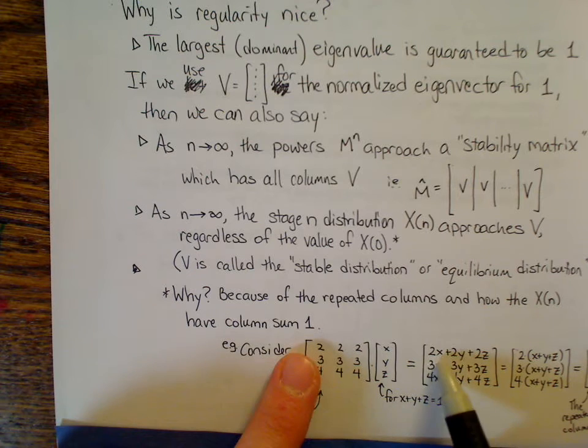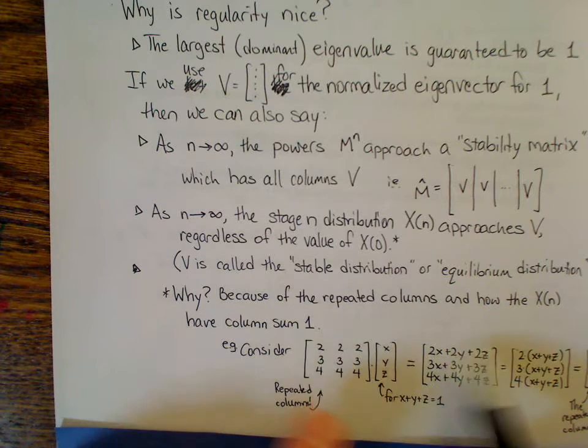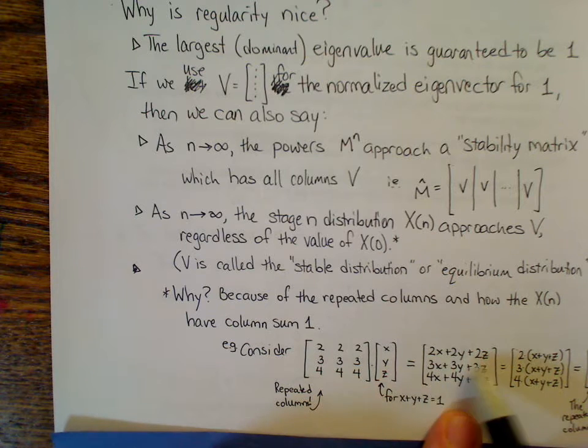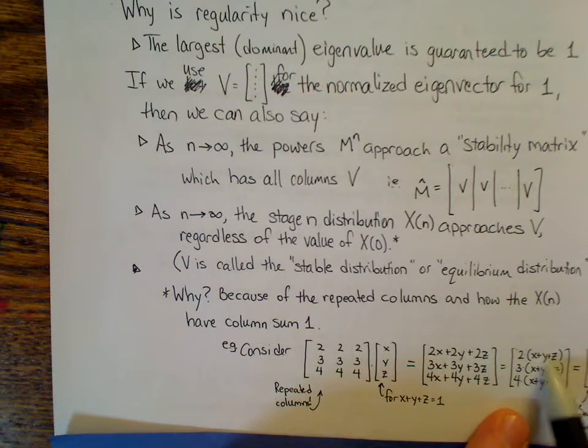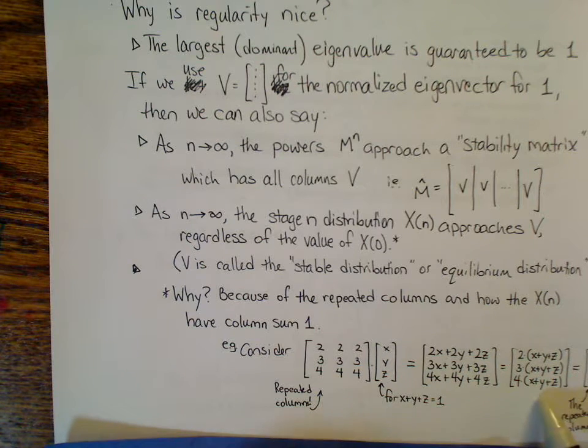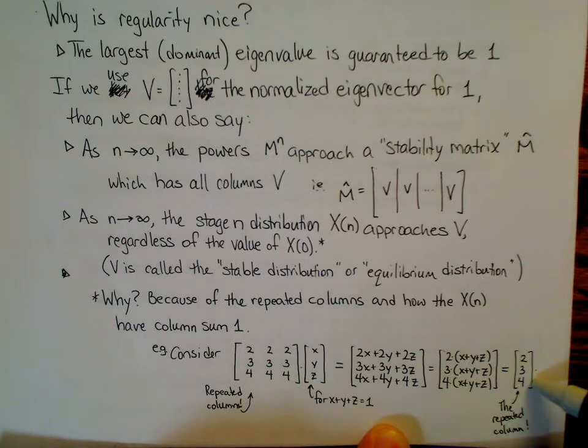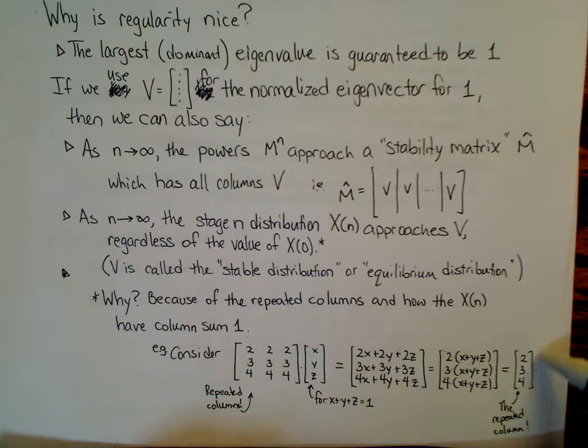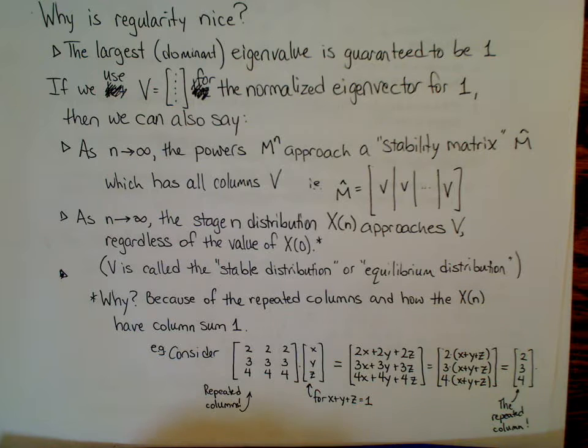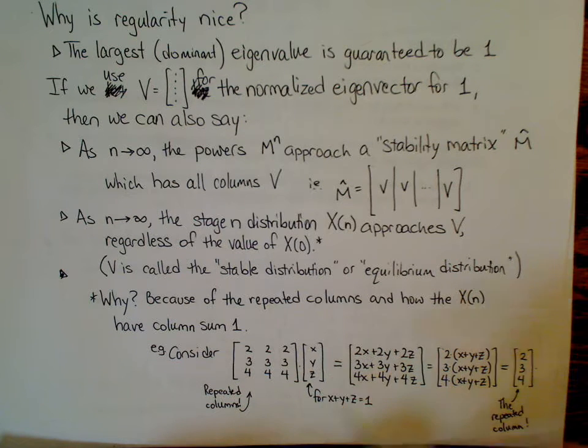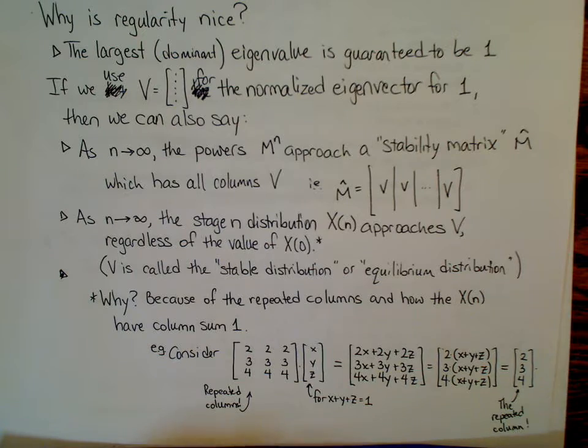All right, you grind through the matrix multiplication, 2x plus 2y plus 2z, 3x, 3y, 3z, 4x, 4y, 4z. Factor out the common 2, the 3, the 4, we get x plus y plus z, x plus y plus z, x plus y plus z. Those are all 1. And so in the end, what we get is 2, 3, 4, regardless of whatever x, y, and z were. As long as they add up to 1, this end result's going to be 2, 3, 4. And really, you're always going to get something 2, 3, 4 times whatever x plus y plus z comes out to. In this case, it was 1.